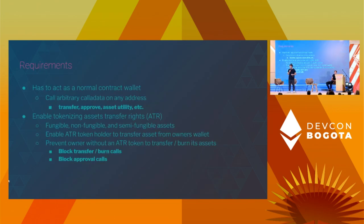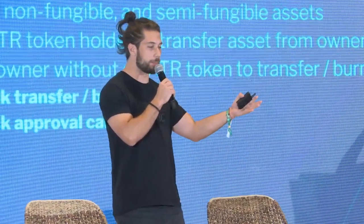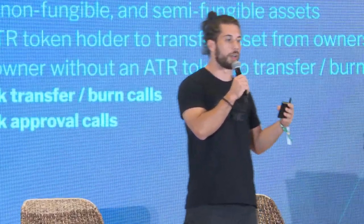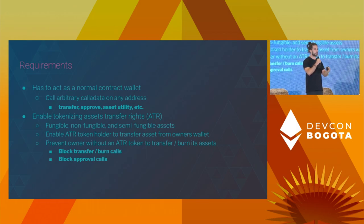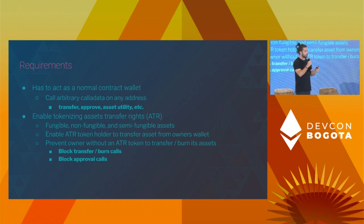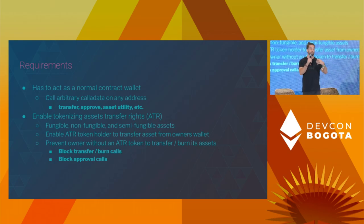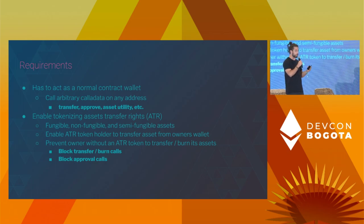It helped me a lot. So back to the topic. Let's define some requirements for this contract wallet. Obviously it has to act as a normal contract wallet — that means you have to be able to call arbitrary call data on any address. And the nice feature is enabling tokenizing asset transfer rights. We want to enable tokenizing these rights to fungible, non-fungible, and semi-fungible assets. One of the two things it means is to enable the ATR token holder to transfer the assets from the owner's wallet — so you don't own the asset, but you are able to transfer it. And the second part is to prevent the owner without the ATR token from transferring it.